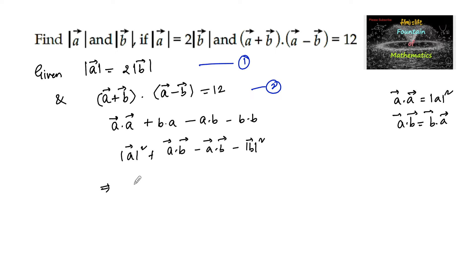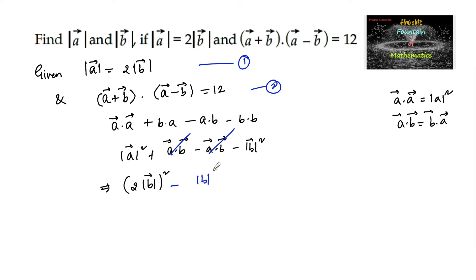From the given condition, mod a is equal to 2 times mod b, so we can write 2 times mod b whole squared. The a dot b and a dot b terms cancel, leaving 4 mod b squared minus mod b squared, which is equal to 12.